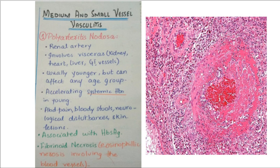Other clinical features include severely accelerating hypertension due to renal artery involvement. Diagnosis is usually done by angiography, which shows aneurysms and smooth muscle narrowing of the visceral vessels — including mesenteric, hepatic, and renal vessels. A biopsy is another diagnostic option. Treatment is usually with high-dose steroids and immunosuppressants.